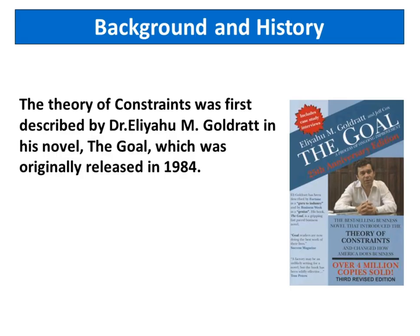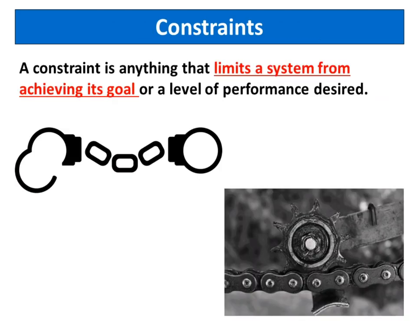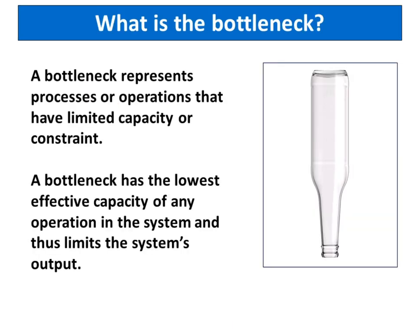The theory of constraints was first described by Dr. Eliyahu M. Goldratt in his novel, The Goal, which was originally released in 1984. A constraint is anything that limits a system from achieving its goal or a level of performance desired. A bottleneck represents processes or operations that have limited capacity or constraint.